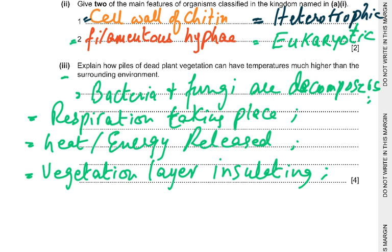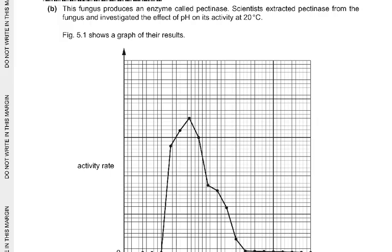Bacteria and fungi decompose and respire, so heat or energy is released. The vegetation layer is insulating — those dead leaves lying on top don't allow the heat to escape, just like a hot pot that keeps rotis warm. It insulates and doesn't lose heat. The vegetation acts as an insulating layer.